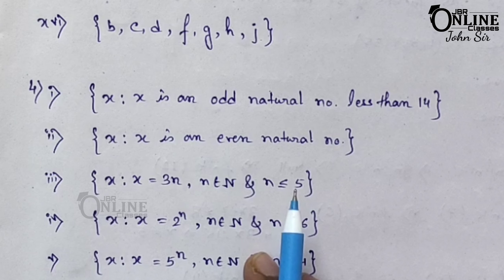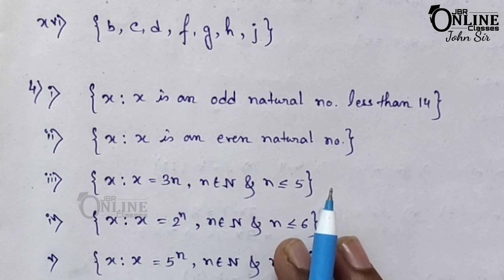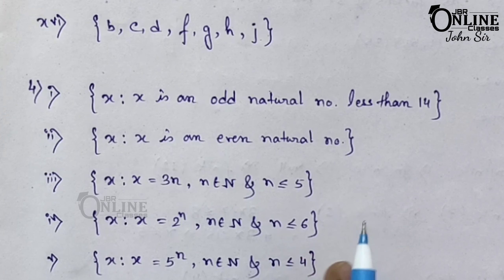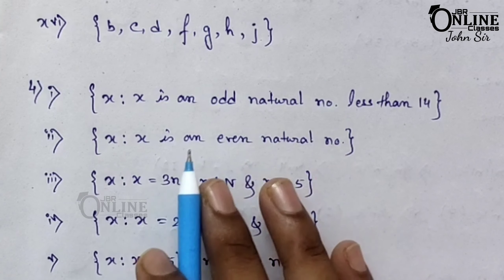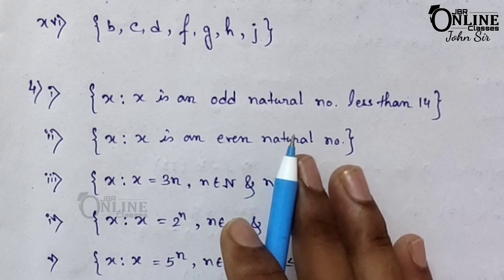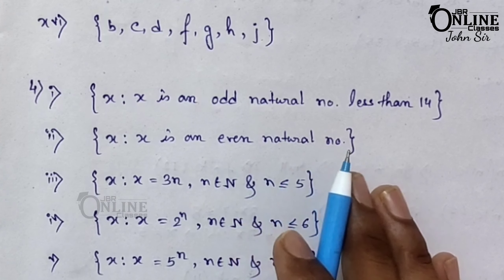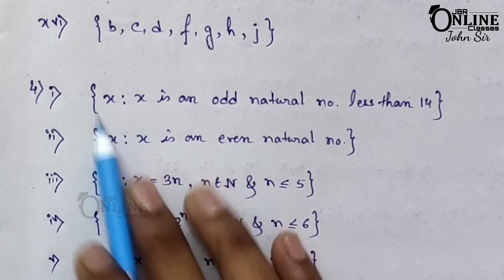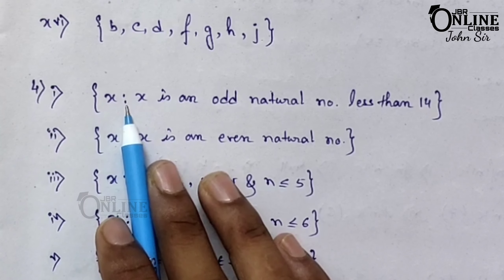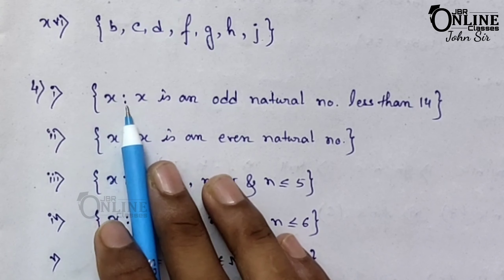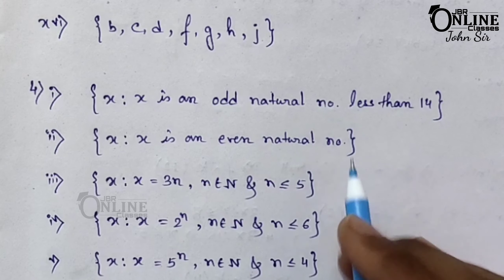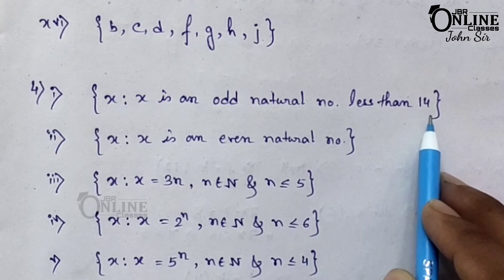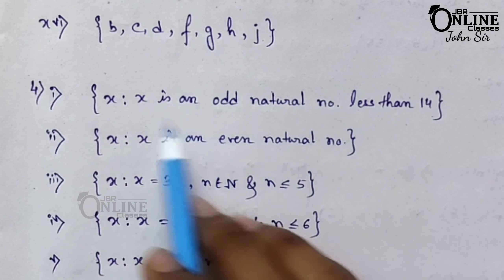Sum number 4: write the following sets in set builder form. First one: {1, 3, 5, 7, 9, 11, 13}. All are odd numbers and natural numbers. So write it as: {x | x is an odd natural number less than 14}. Since 13 is the last number, the condition is odd natural number less than 14.